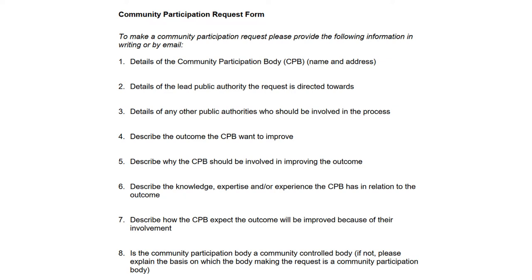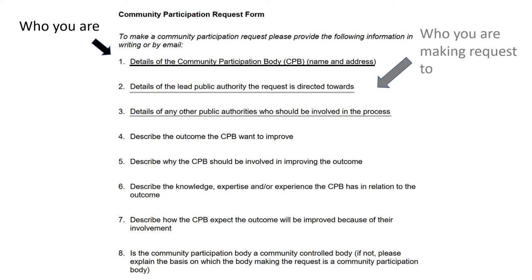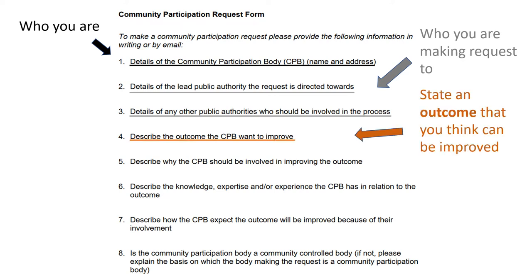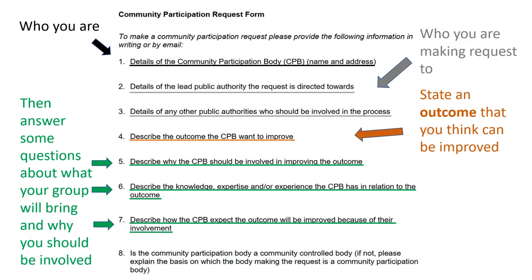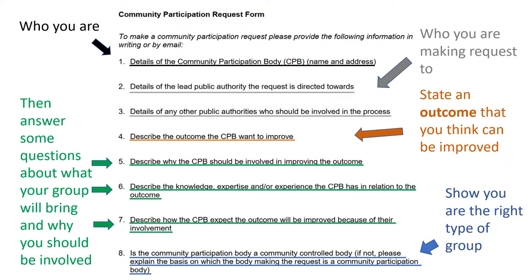However, if you break it down, the form is asking five things: who you are; who you are making the request to; an outcome that you think can be improved; some questions about what your group will bring and why you should be involved; and to show that you are the right type of group. We've got guides to completing the questions in our online resource pack on SCDC's website.